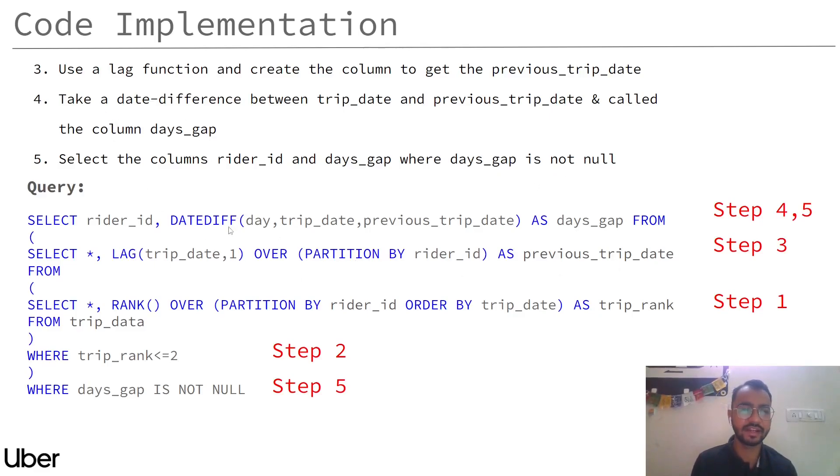In my final step, I have only selected my rider_id and my days_gap, and I have given this condition that my days_gap is not null so that I get my output of only rider_id and days_gap column. So that was it for this video, thank you for watching.